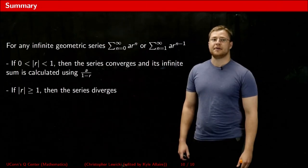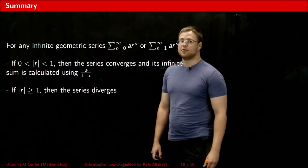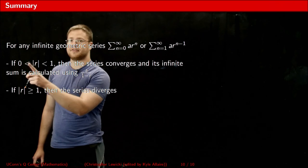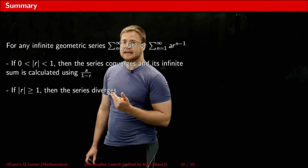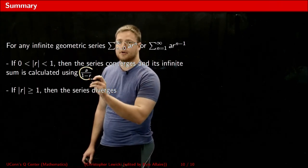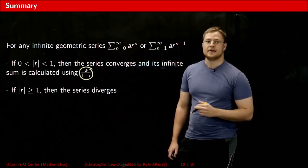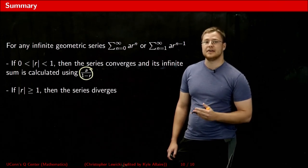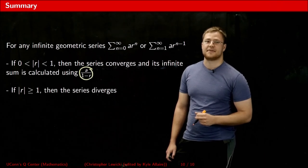To briefly summarize this video: an infinite geometric series converges if and only if the absolute value of its r value is somewhere between 0 and 1. The infinite sum of any convergent geometric series can be calculated using the simple formula a divided by quantity 1 minus r. Finally, if the absolute value of your r value is equal to or greater than 1, then the series diverges. Thank you for watching this video.